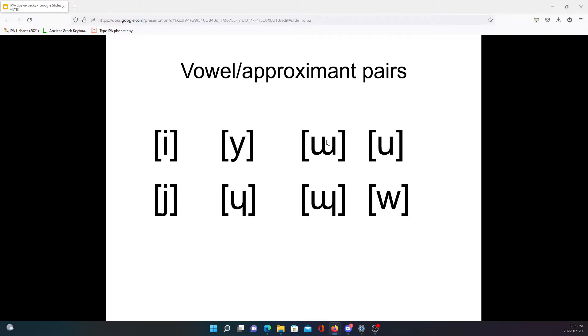So it's exactly the same difference as between the unrounded and the rounded vowel. And then if we go back, the close back unrounded, close back rounded vowels, and then we have the velar approximant and the labial velar approximant.